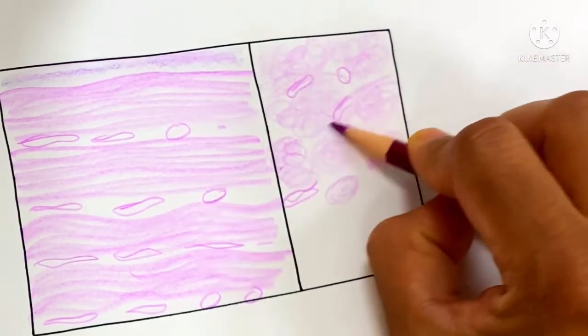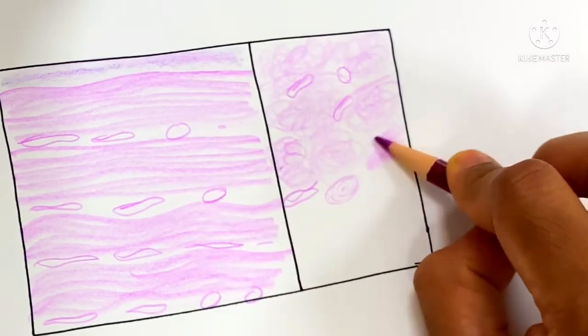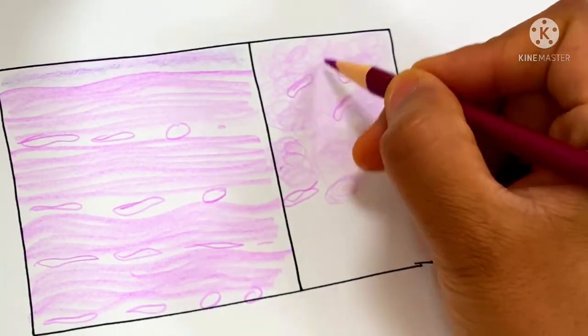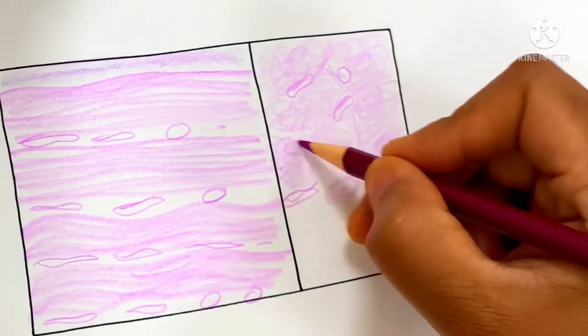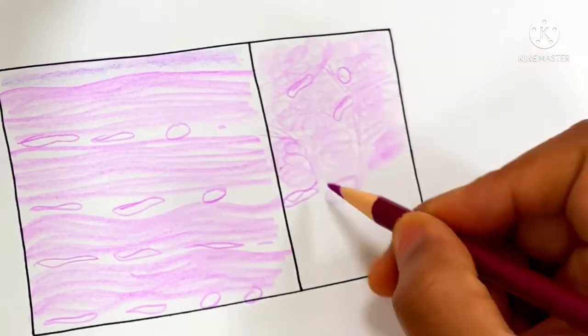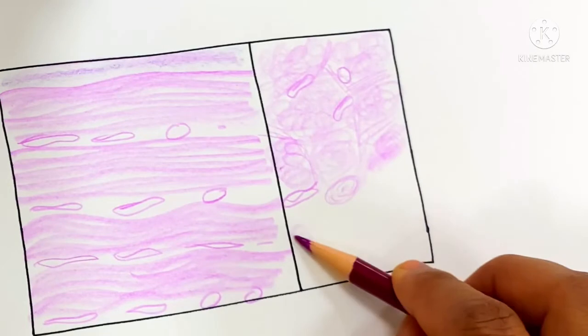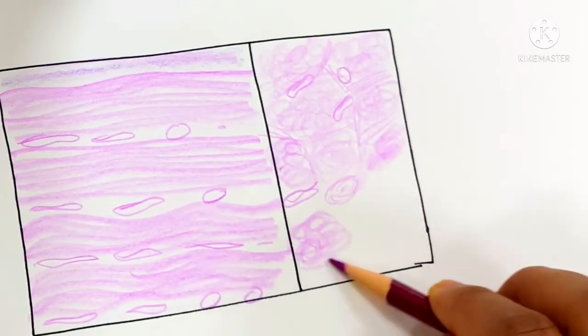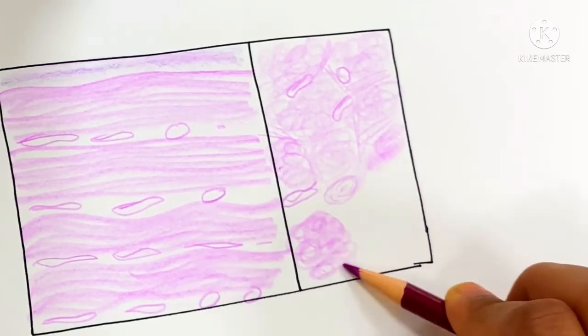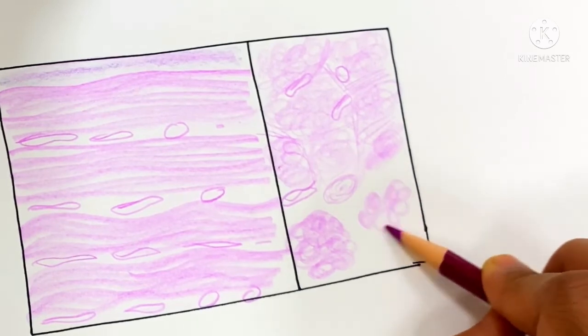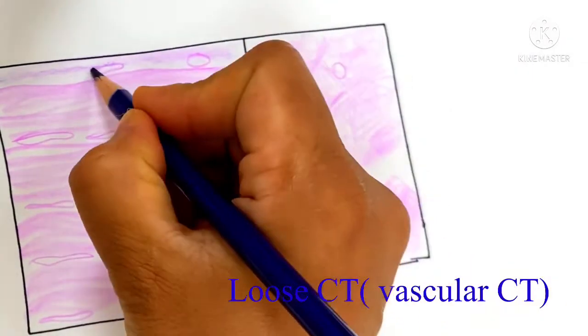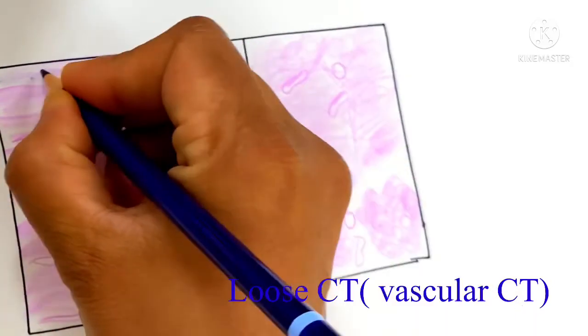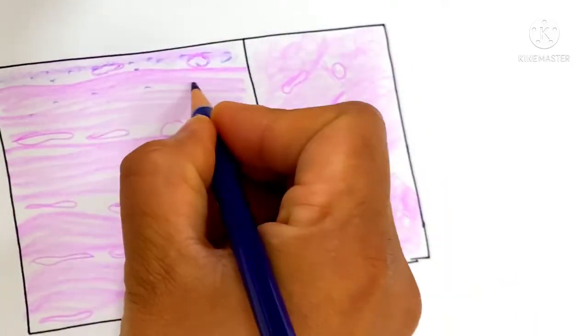Here we are drawing the transverse section. It contains bundles of collagen fiber. In between the bundles there is loose connective tissue, a very little amount of vascular connective tissue, and in between there is a blood vessel.